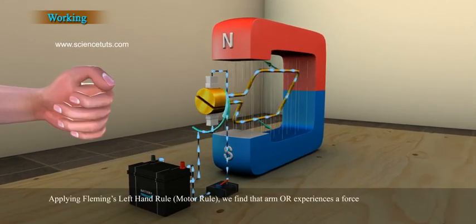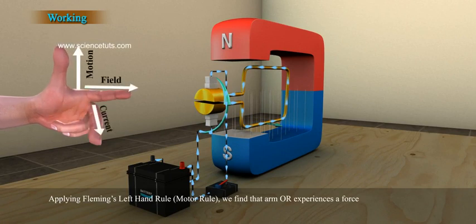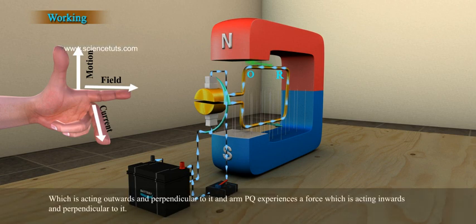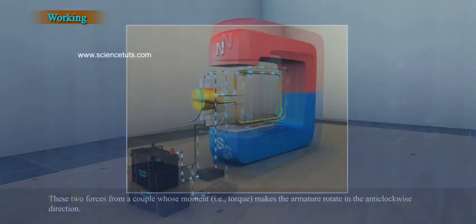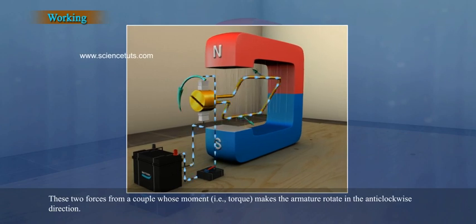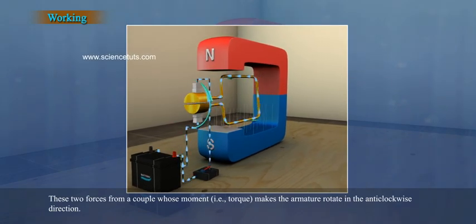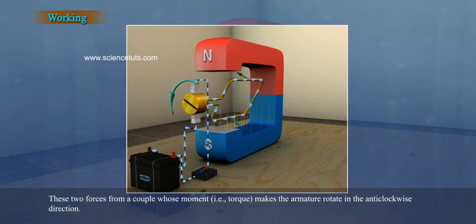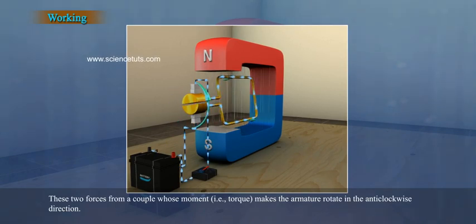Applying Fleming's left hand rule, or motor rule, we find that arm OR experiences a force which is acting outwards and perpendicular to it, and arm PQ experiences a force which is acting inwards and perpendicular to it. These two forces form a couple whose moment, i.e. torque, makes the armature rotate in the anti-clockwise direction.